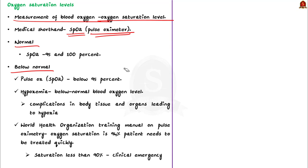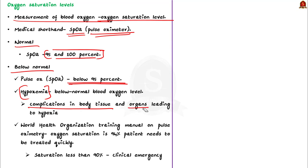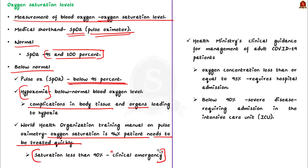There are three oxygen saturation levels: normal (95–100%), above normal, and below normal. A pulse oximeter reading below 95% is called hypoxemia, which is often a cause of concern especially in the current pandemic. The lower the oxygen level, the more severe the hypoxemia, which can lead to complications in blood tissues and organs. According to the WHO training manual on pulse oximeters, if oxygen saturation is 94% or lower the patient needs to be treated quickly, and a saturation below 90% is a clinical emergency. According to the latest health ministry guidelines, adult COVID patients with oxygen concentration ≤93% on room air require hospital admission, while below 90% is classified as severe disease requiring ICU admission.